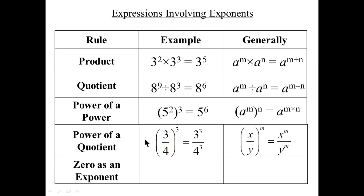Zero as an exponent: this says use eight as a factor zero times — in other words, don't multiply by eight, just leave it as one. That's why anything to the zero is one. Literally anything to the zero is one.